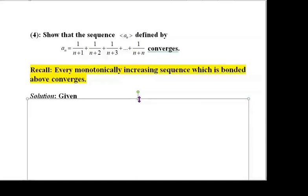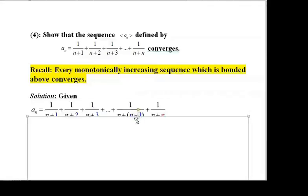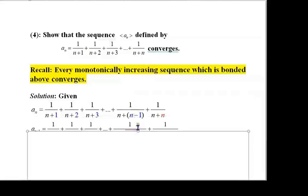We will find aₙ₊₁, then find the difference of aₙ₊₁ and aₙ, and show that the difference is positive. In aₙ, the numerator 1 is constant, the first term n in the denominator is constant, whereas the second term varies: 1, 2, 3, ..., n.